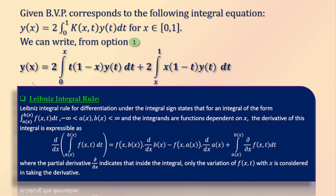Now we have to differentiate y(x), and to do that we recall the Leibniz integral rule, mainly used for differentiation under the integral sign. The Leibniz integral rule states that for an integral of the given form, where a(x) and b(x) are the lower and upper limits respectively and the integrand is a function dependent on x, the derivative of the integral is expressible as a specific formula. The partial derivative ∂/∂x inside the integral considers only the variation of f(x,t) with x.